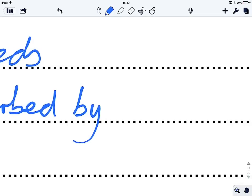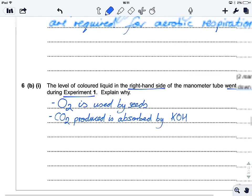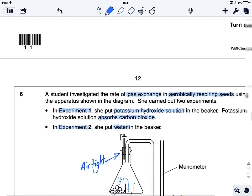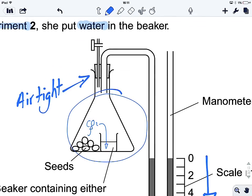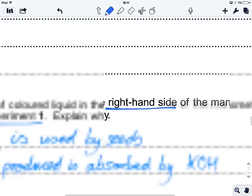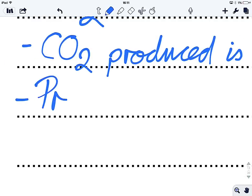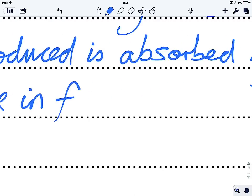So, that's probably worth two marks. The one thing that everyone forgets to mention is why the level of the coloured liquid goes down, and it's to do with pressure. So, if CO2 has been absorbed by the potassium hydroxide, the air pressure within that little conical flask, the air pressure in here is going to go down. So, that's going to cause the water to move around. So, pressure in flask decreases.